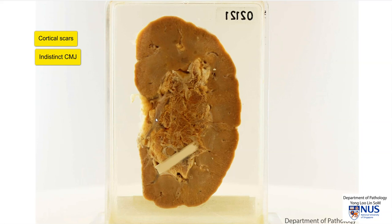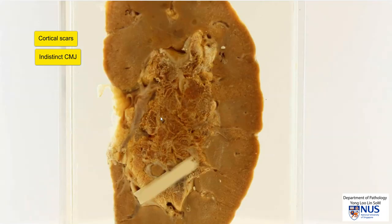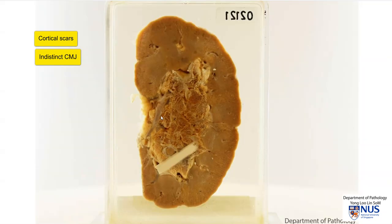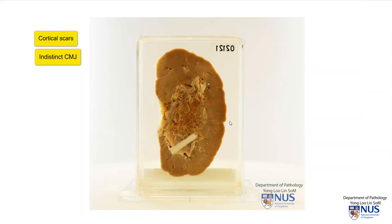Looking at the renal pelvis, this is quite difficult to appreciate in this particular plane of section, but we can see part of the renal pelvis here. The calyceal system is not well seen, but it appears to be somewhat distorted. So we have a combination of features: deep cortical scars, blurring of the corticomedullary junction, and some distortion of the renal pelvic calyceal system.